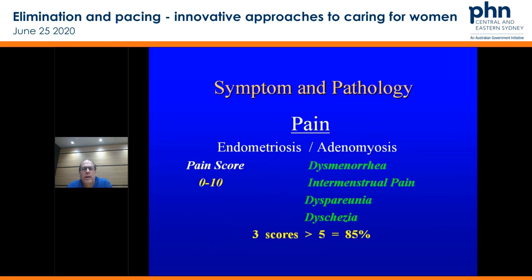Importantly — and I've put this on your cheat sheet — the pain scoring. Take a pain score from your patients. It's very easy to do: dyspareunia, intermenstrual pain, dyspareunia, dyschezia. Just ask them to rate it zero to ten. You can do visual analog or just get them to put a number. Essentially, if you've got three scores over five in that group, generally speaking that's an 85% pickup for something such as endometriosis. It's very important to know that because it makes deciphering that quite easy.